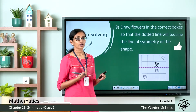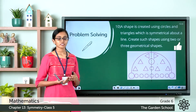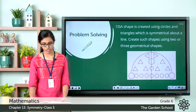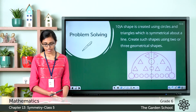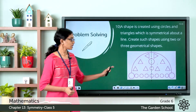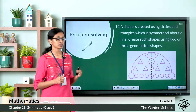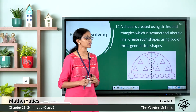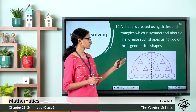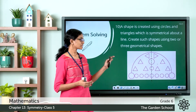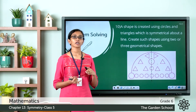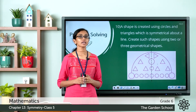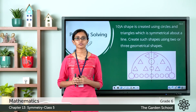The tenth question says: a shape is created using circles and triangles which is symmetrical about a line — create such shapes using two or three geometrical shapes. The image given in your textbook is symmetrical about a vertical line of symmetry and is created using different geometrical shapes like triangles and circles. You have to create similar shapes using different geometrical shapes such as triangles, circles, squares, rectangles, and so on, and the resulting shape should be symmetrical about at least one line of symmetry.